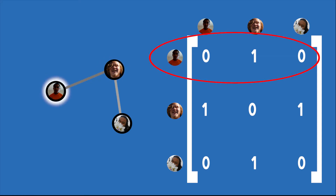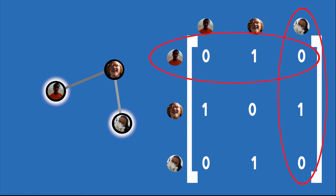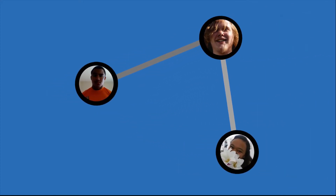If two dots are connected, we'll put a one where the row of one dot meets the column of the other dot. If two dots aren't connected, we'll put a zero. This is an adjacency or connectivity matrix, and all it says is how a graph is connected.